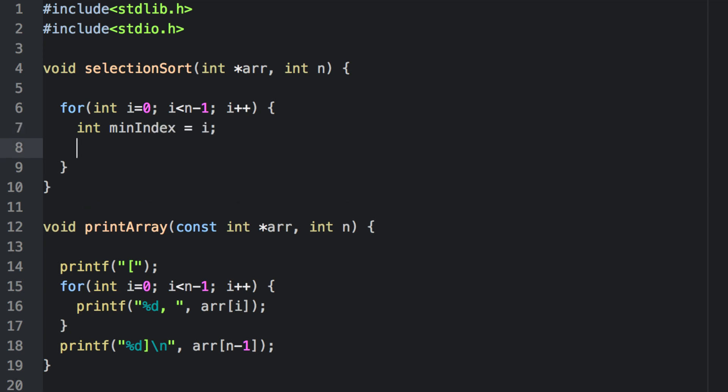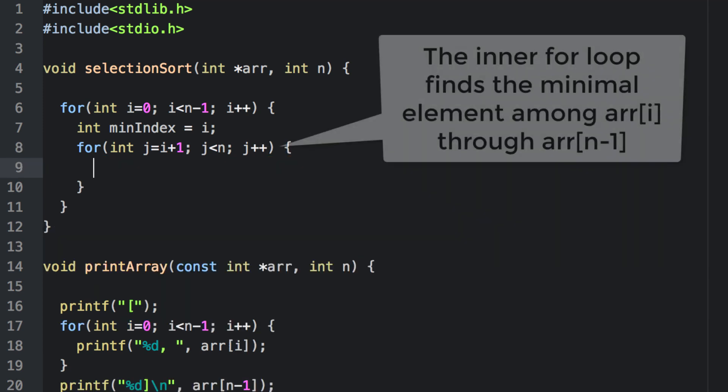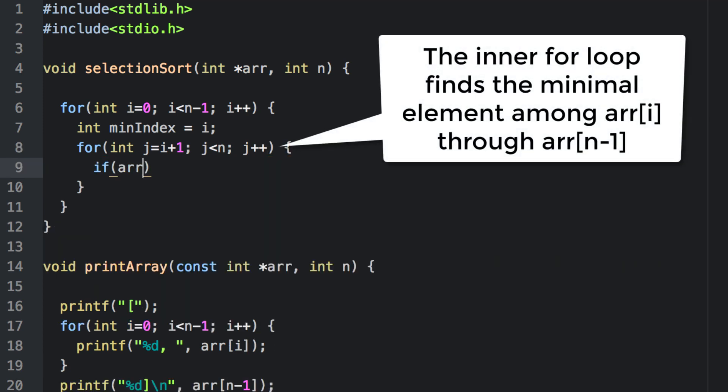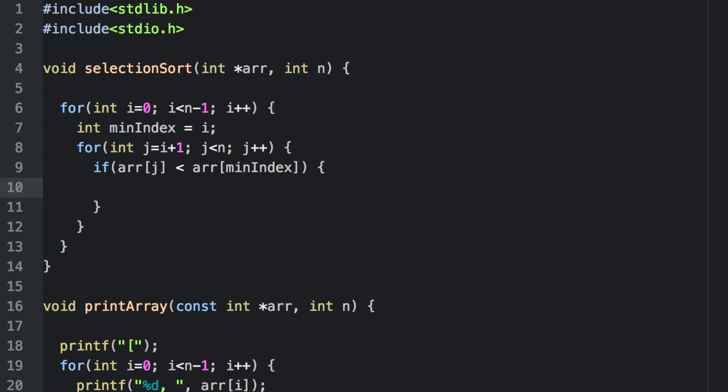Now for finding the minimal element among elements indexed i up to n minus 1, we'll start by assuming that the i-th element is our minimum element and then proceed to go through the rest of the array to see if we can find an element that's less. If the j-th element is less than the minimum that we've found so far, we'll go ahead and update our index.